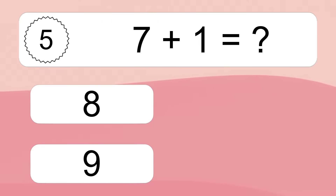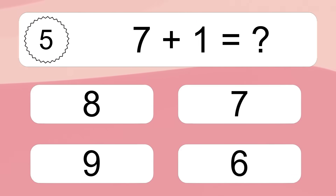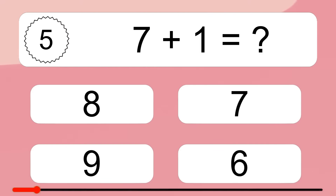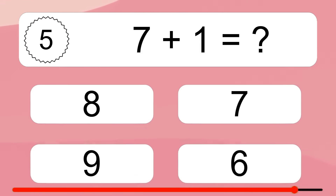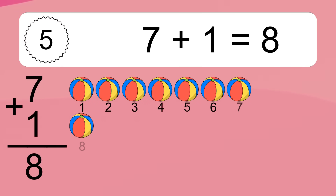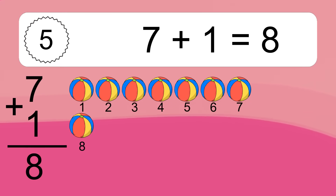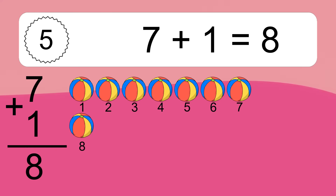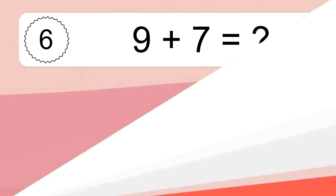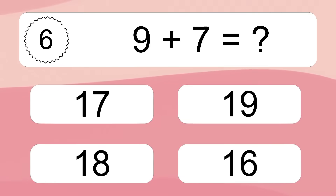7 plus 1 equals what? 7 plus 1 equals 8. Let's count it: 1, 2, 3, 4, 5, 6, 7, 8.